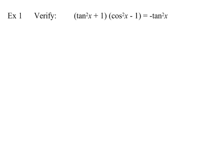Let's jump into the first example. We need to verify that what's on the left-hand side equals what's on the right-hand side. We have an expression squared plus or minus one, so let's try using our Pythagorean identities. One of them looks like this: one plus tangent squared of u equals secant squared of u.